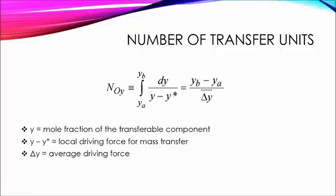The number of transfer units is loosely analogous to the number of ideal trays required. Both can be thought of as measures of the difficulty of the separation.